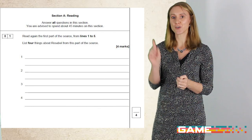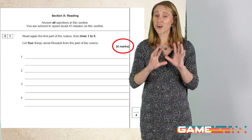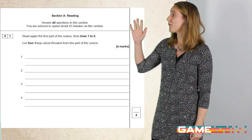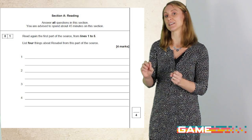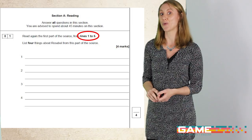So what do you need to know for question one? Question one is worth four marks. You need to spend no longer than five minutes to answer that question. You need to ensure that you've got four distinct answers — make sure they're really different and you haven't repeated yourself. But the good news is you can directly quote from the text, using short quotes within the line numbers indicated in the question.